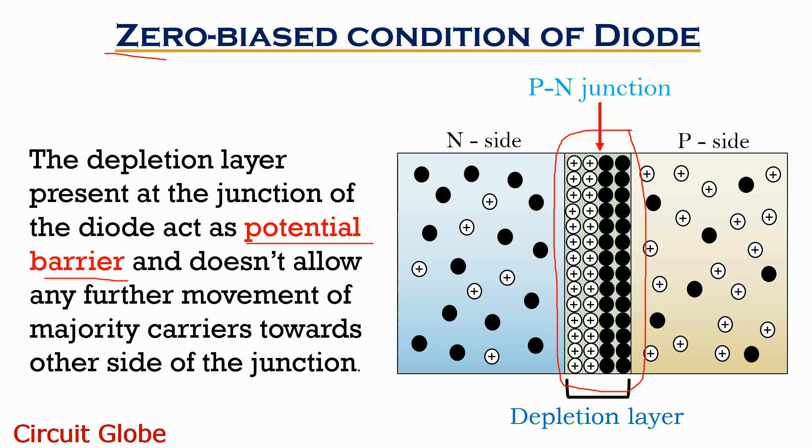This is basically a zero biased condition of a diode where no external potential is provided but still carrier drift across the junction occurs for a certain period of time.